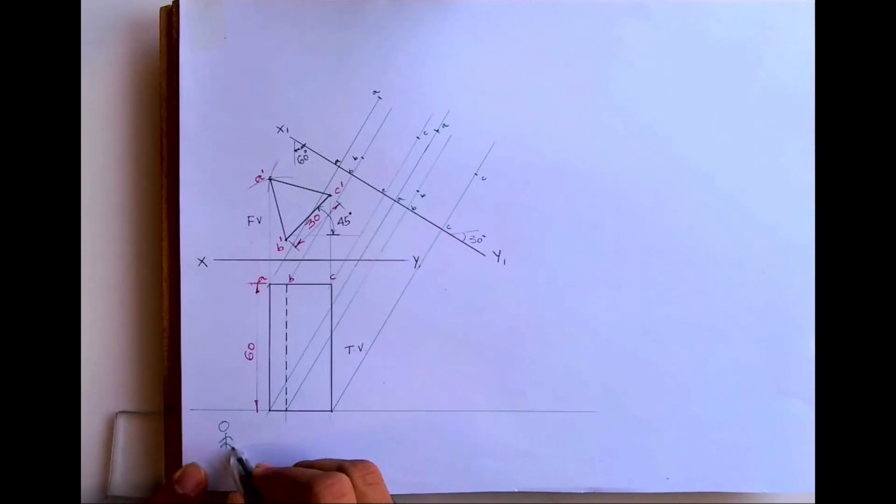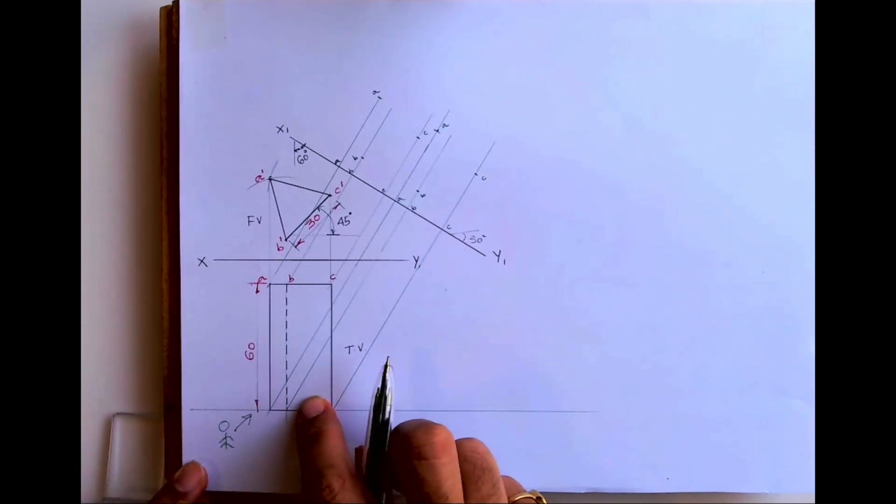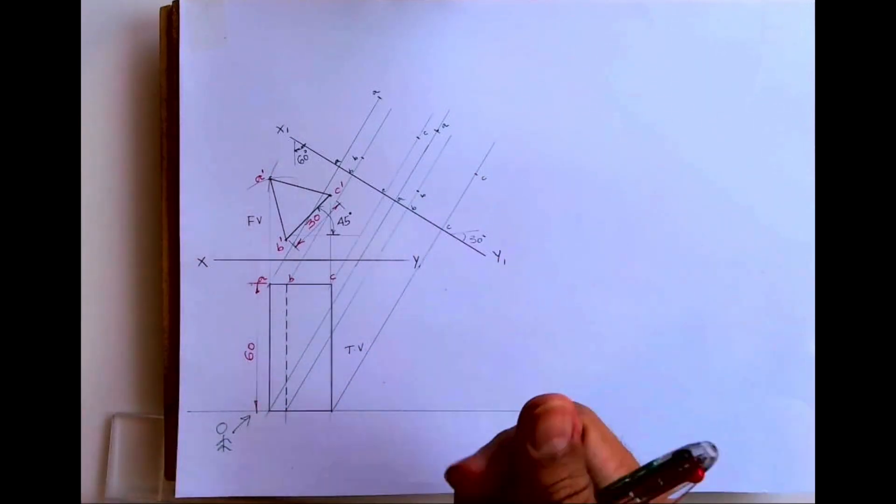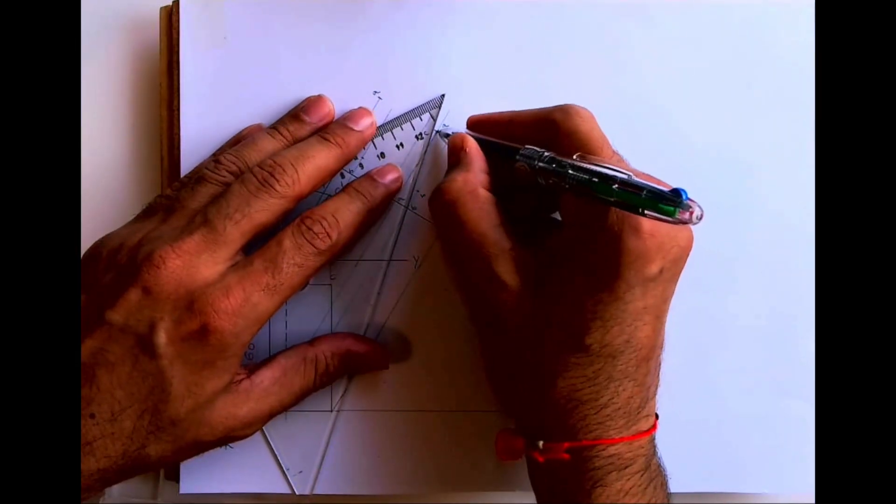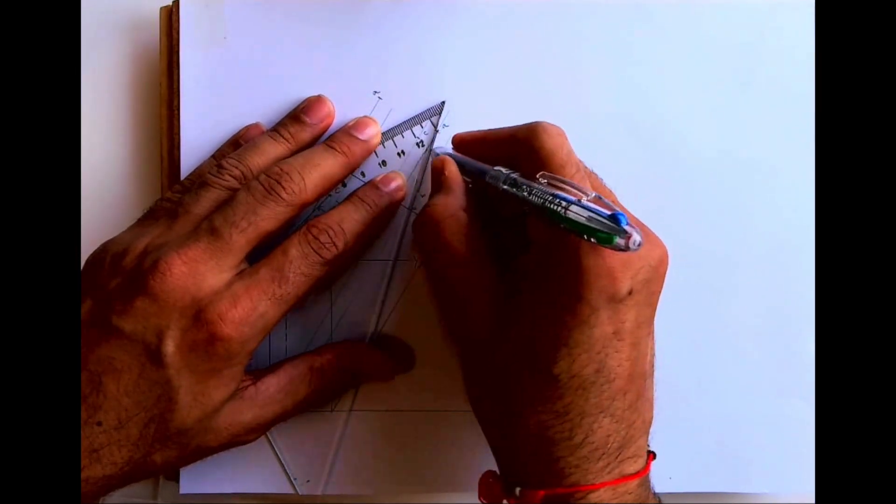Now observer is watching it from here. It's first angle. He will see from here and he will draw it on the other side. So this part will be dark, this A, B, C, because it is nearer to the observer.